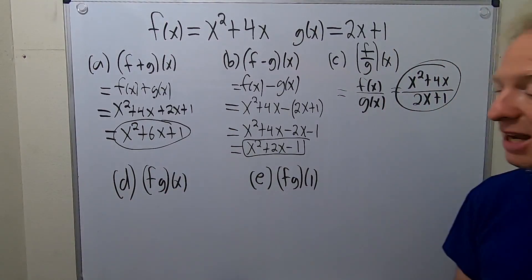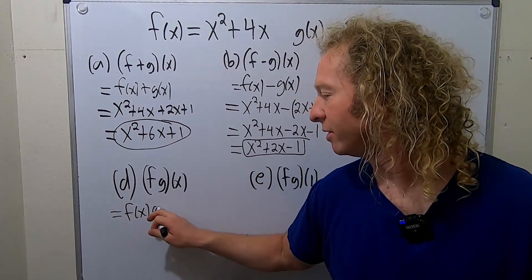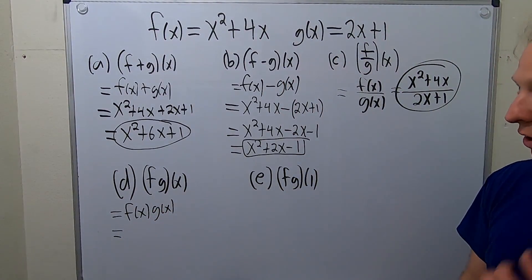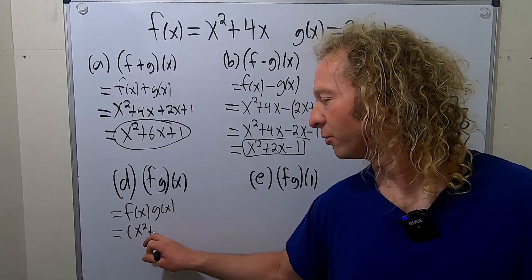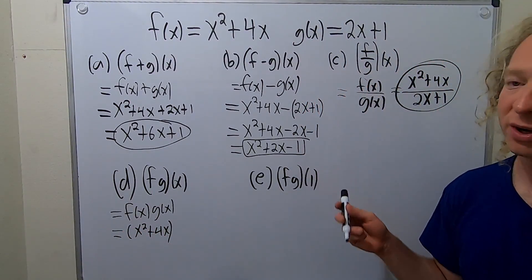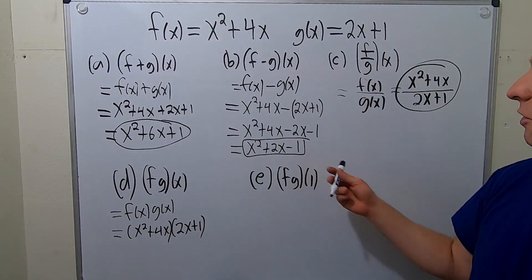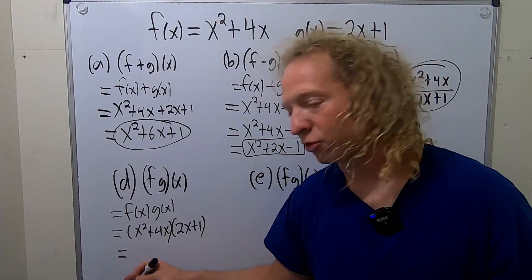Same thing here. Except this time it's times. So it'll be f of x times g of x. A little bit more annoying because we do have some work to do. So f of x is x squared plus 4x. So it'll be x squared plus 4x. Good stuff. g of x is 2x plus 1. So this will be 2x plus 1. So they're all the same, really. You just basically have different operations. So now we have to distribute.